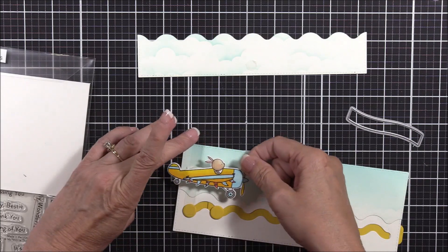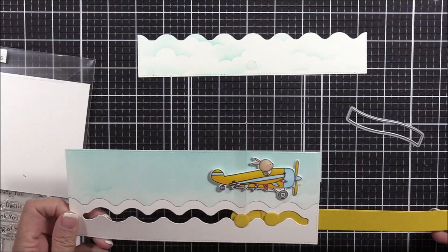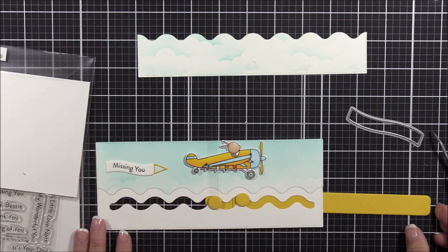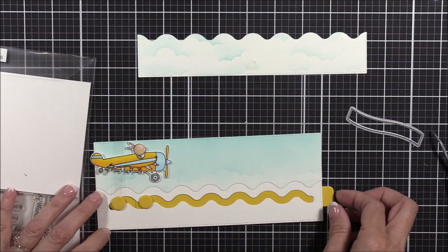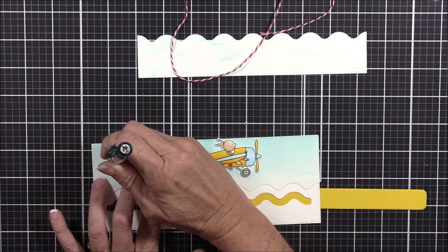Now that I figured out where everything goes, I'll adhere a foam square to the acetate strip, and this is where I'll adhere the airplane. I'll reposition the Banner die cut onto the card panel, and I'll use my pencil to mark its position. I'll apply some liquid adhesive to the back of the banner, and I'll adhere it onto the card panel.